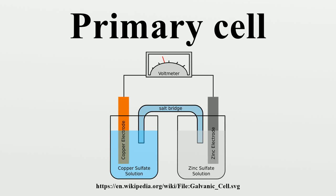A primary cell is a battery that is designed to be used once and discarded, and not recharged with electricity and reused like a secondary cell.